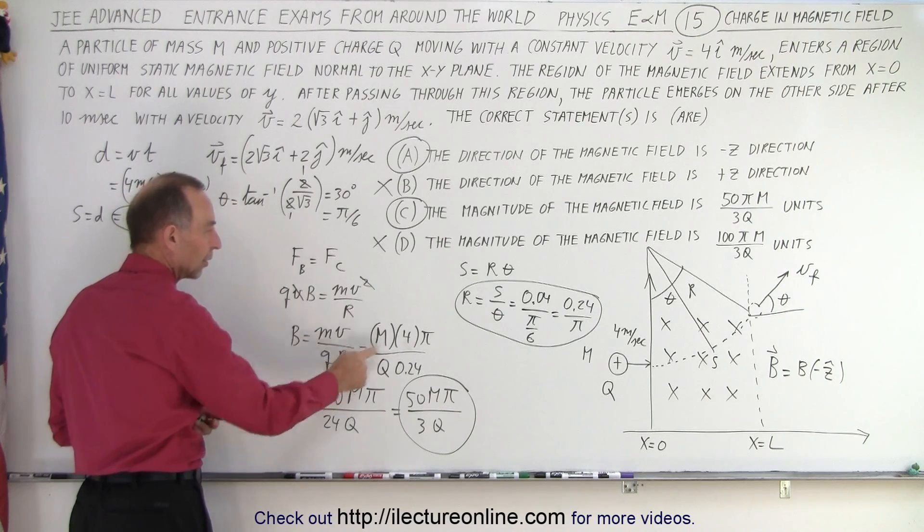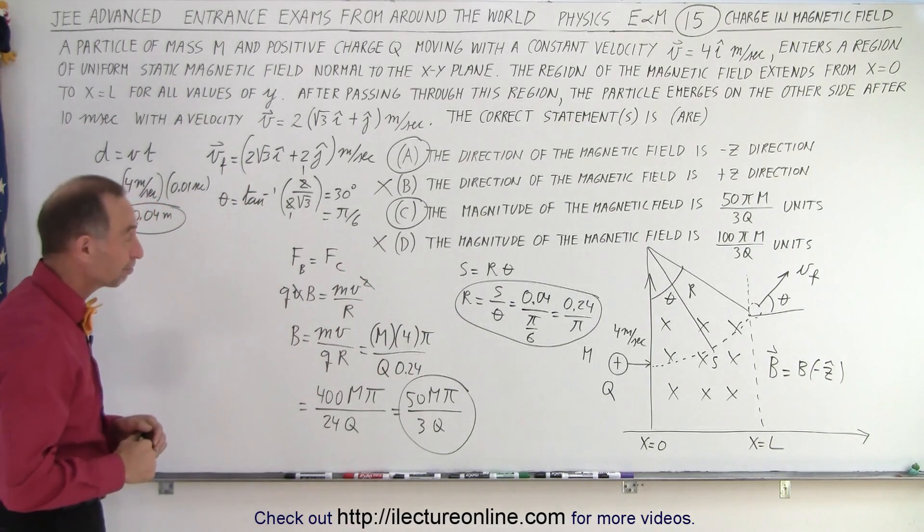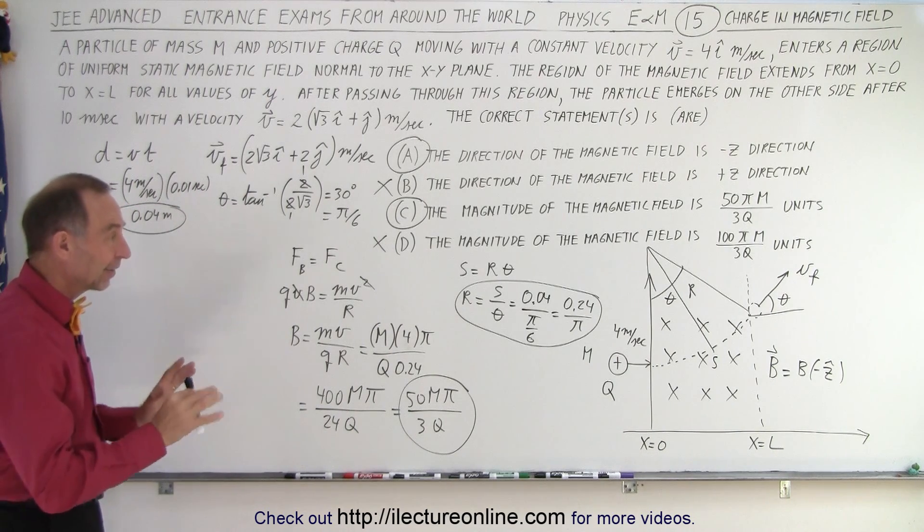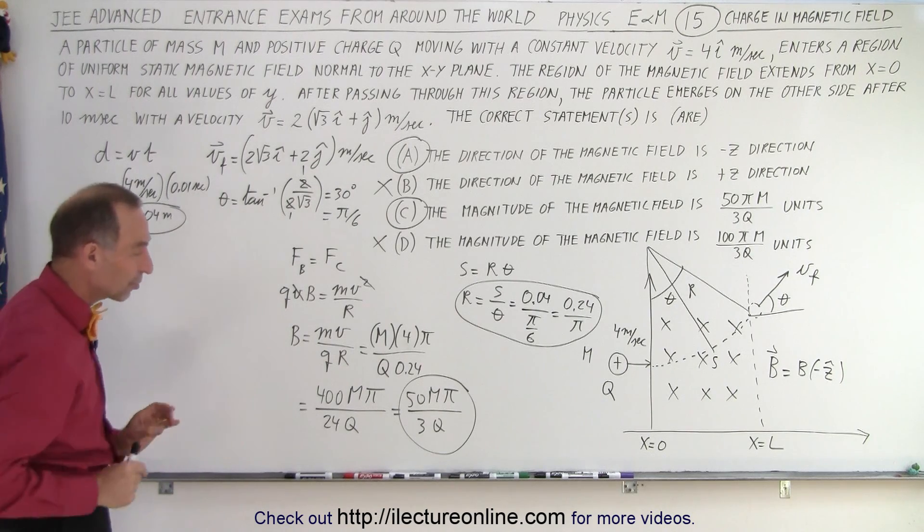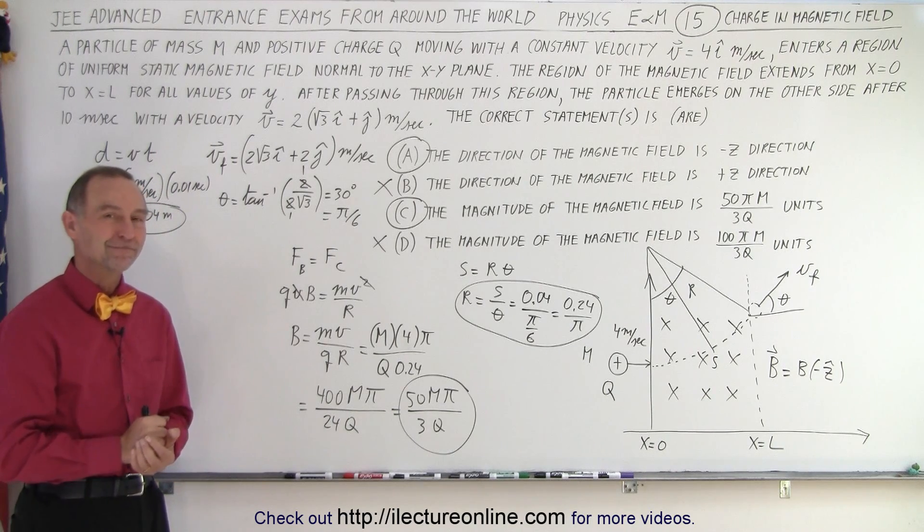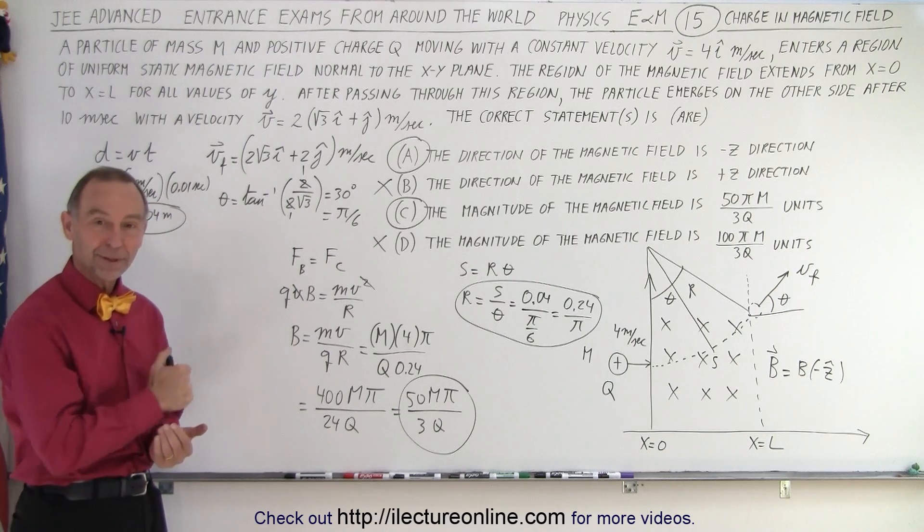Then by setting these two equal to one another, FB equals FC, we then realize that we could solve for B. And v is known, m is m, q is q, and r was figured out like that. The rest, you know, that's straightforward. But yeah, again you have to think about all those things. But if you're on top of it and you remember those key equations, you could probably squeeze this one out in about three minutes. And that is how it's done. Fun problem now.